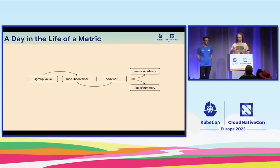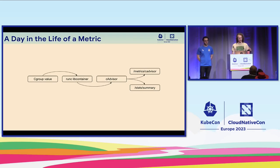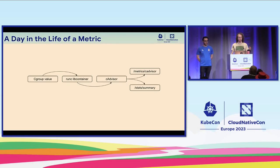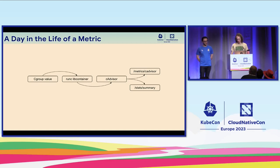Let me walk through how a metric travels from the kernel to you as a cluster admin. Consider a cgroup value like CPU usage. The cgroupFS is exposed by the kernel — it's basically just a file, like everything else in Unix — and the kernel keeps it up to date with all the processes within that cgroup. RunC's libcontainer is a library used by both RunC the binary and CAdvisor to read those values from the cgroupFS, simply by opening and reading a file. CAdvisor calls into libcontainer to read the cgroup value, and CAdvisor is watching all cgroups being created on the node.